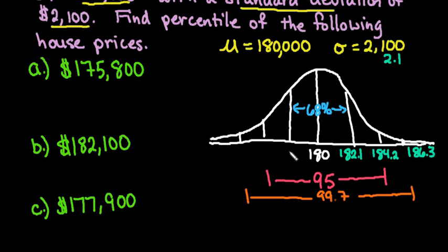Going to the left, we subtract. So instead of adding the 2.1, we always subtract to go this way. So this is 177,900, then we have 175,800, and then we would have 173,700.